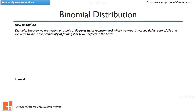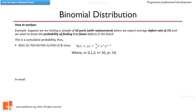Let us see how to analyze binomial distribution with the help of an example. Suppose we are testing a sample of 50 parts with replacement, where we expect a defect rate of 1% and we want to know the probability of finding two or fewer defects in the batch. Since we want the probability of two or less defects, we calculate cumulative probability — that is, probability of getting zero defects, one defect, and two defects — and take the summation. The answer from manual calculation is 0.986.